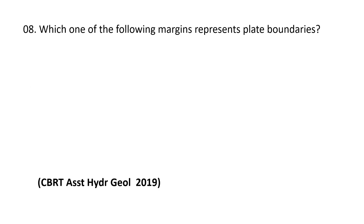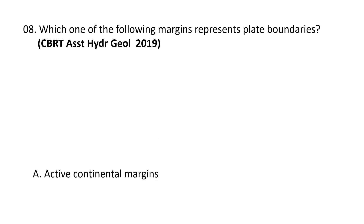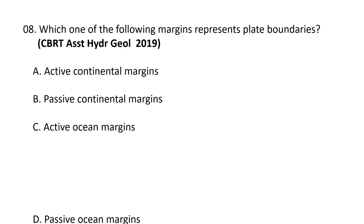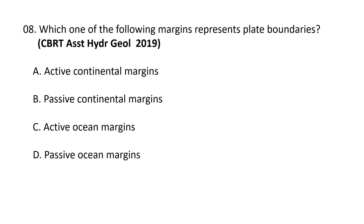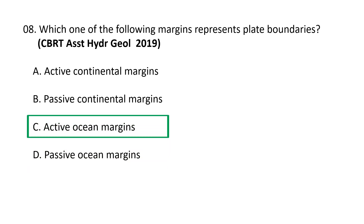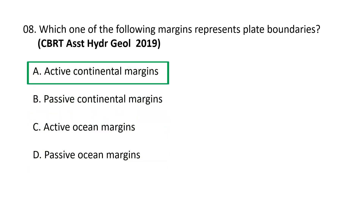Next question: which one of the following margins represents plate boundaries? Options are: a) active continental margins, b) passive continental margins, c) active ocean margins, d) passive ocean margins. The correct option is a) active continental margins. Active continental margins, referred to as Pacific-type margins, are zones of seismically active convergent plate boundaries characterized by subduction zones formed under a variety of settings such as oceanic-oceanic and oceanic-continental. So active continental margins represent plate boundaries.